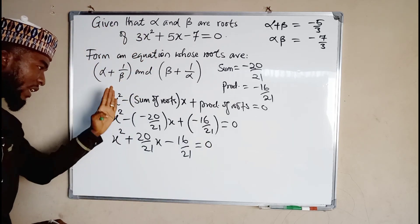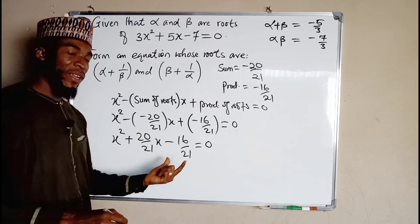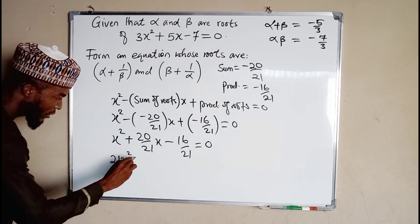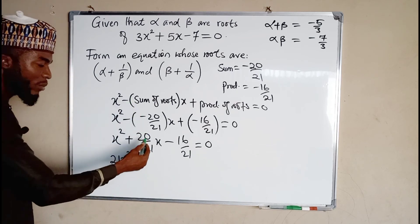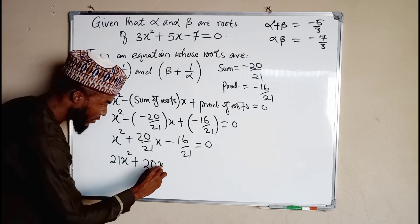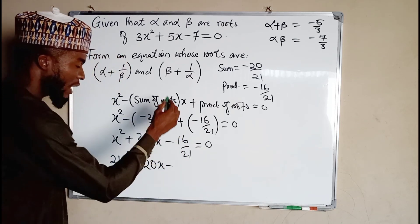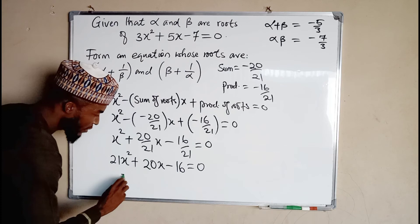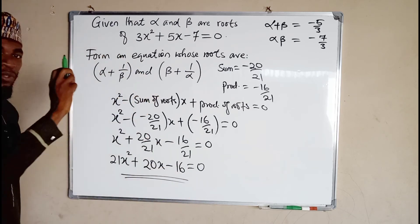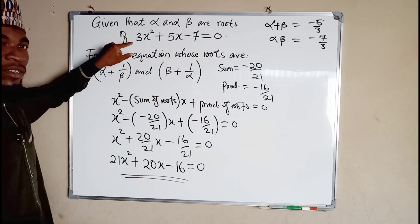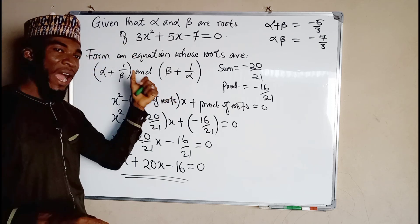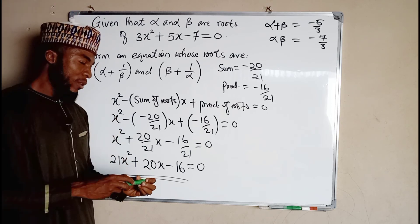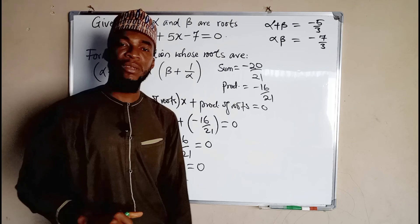By multiplying each term by 21 we clear the fractions: 21x squared plus 20x minus 16 equals 0. This is the new quadratic equation formed from the original quadratic equation, given that those two expressions are the quadratic roots of this newly formed equation. Thank you for watching, do have a nice day.